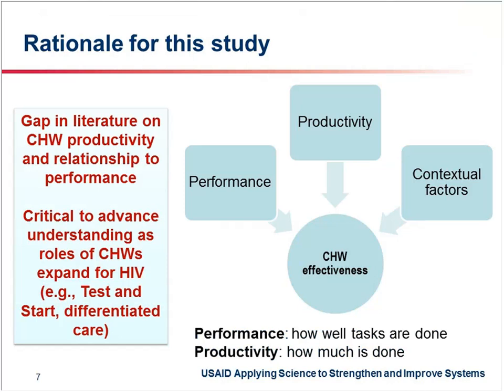There are other contextual factors that also come into play on CHW effectiveness. Performance is looked at in many different ways in the literature with diverse interpretations. For our purposes, we simplified these: performance is defined as the extent to which tasks or services are completed according to standards — how well tasks are done. Productivity is the volume of services, or how much is done. Understanding these factors helps us figure out how to best deploy and support CHWs to maximize their effectiveness.